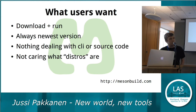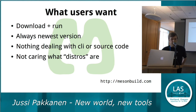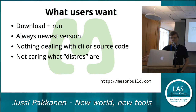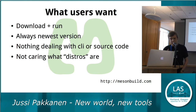Let's look at what actual users want. Basically, all app users want to download an application from somewhere and then run it. If there is a third step, that's too much. They want always the newest version — the version released maybe yesterday, not the one in the distro from six months or two years ago. They don't want to deal with the command line or even know that source code is a thing. They understand the concept of CPUs — arm vs x86 — but they shouldn't have to know whether they have Fedora or which version of it.